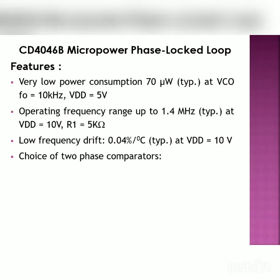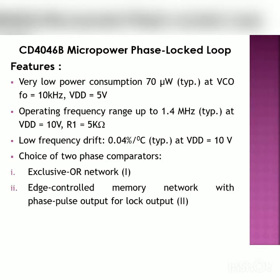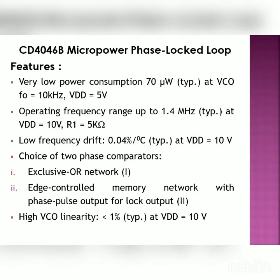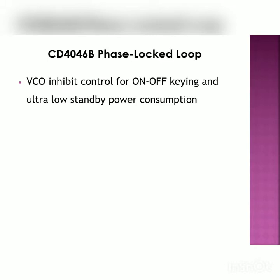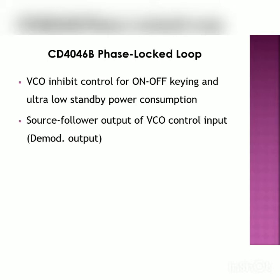The IC provides a choice of two phase comparators: first is the XOR gate, and second is the edge controlled memory network with phase pulse output for the locked condition. The VCO has very high linearity — less than 1% non-linearity at 10 volts. A VCO inhibit control pin is available for on/off keying and ultra low standby power consumption. A source follower output of the VCO control input, available on the demodulator output pin, eliminates loading effects.